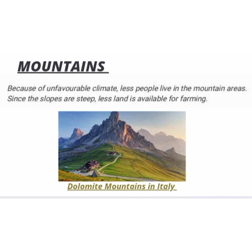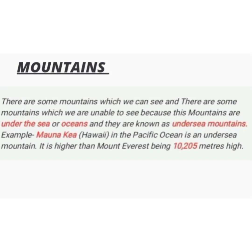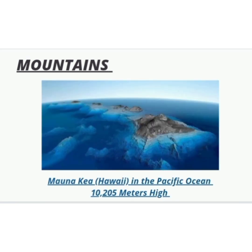Since the slopes are steep, land for agriculture and farming is less available. There are some mountains which we can see and some which we are unable to see because they are under the sea or oceans — these are called undersea mountains. Mauna Kea in Hawaii in the Pacific Ocean is an undersea mountain and it is higher than Mount Everest, with a height of 10,205 meters.